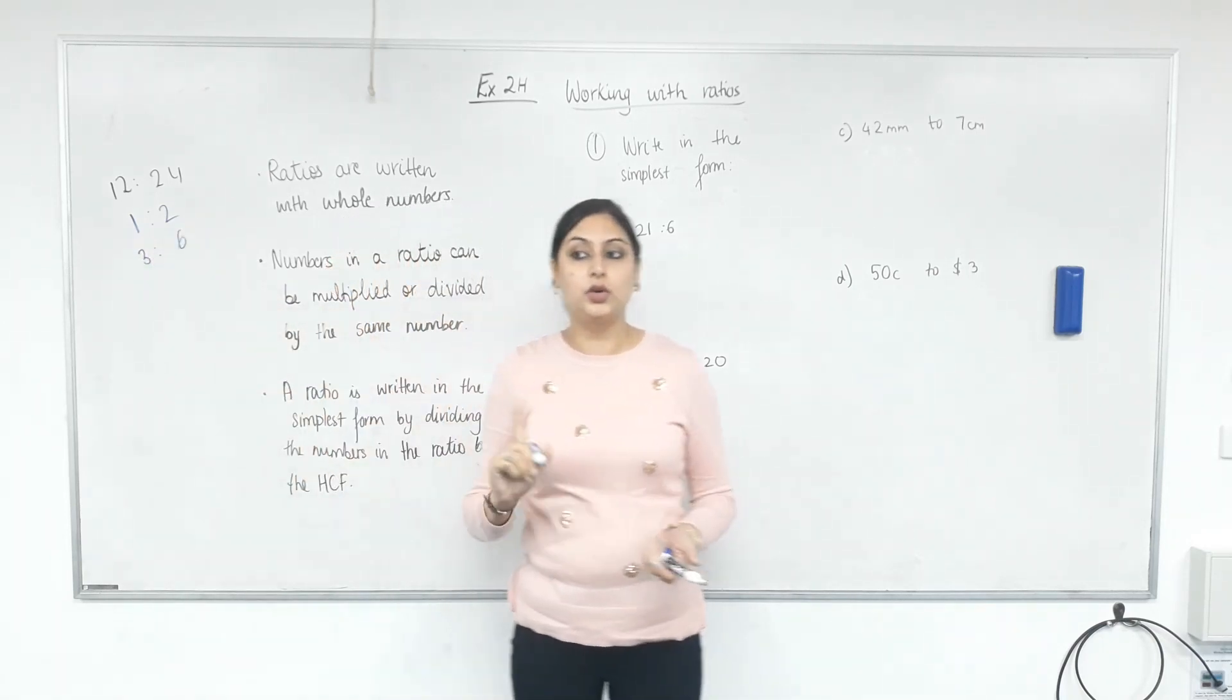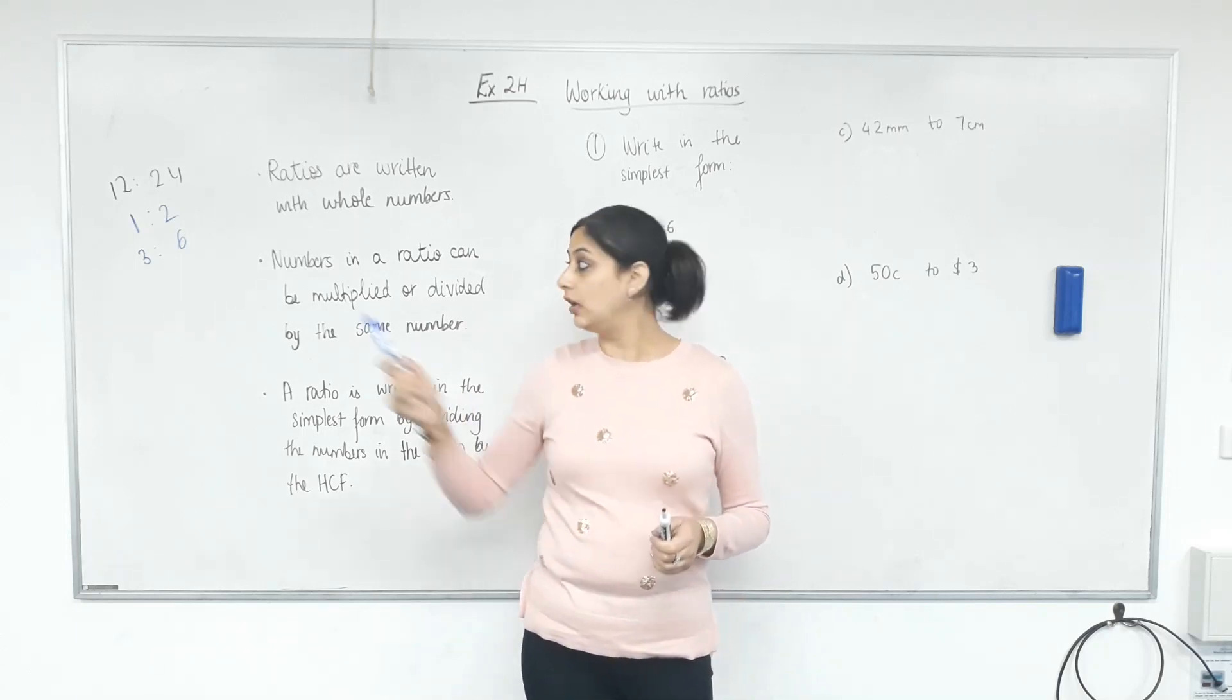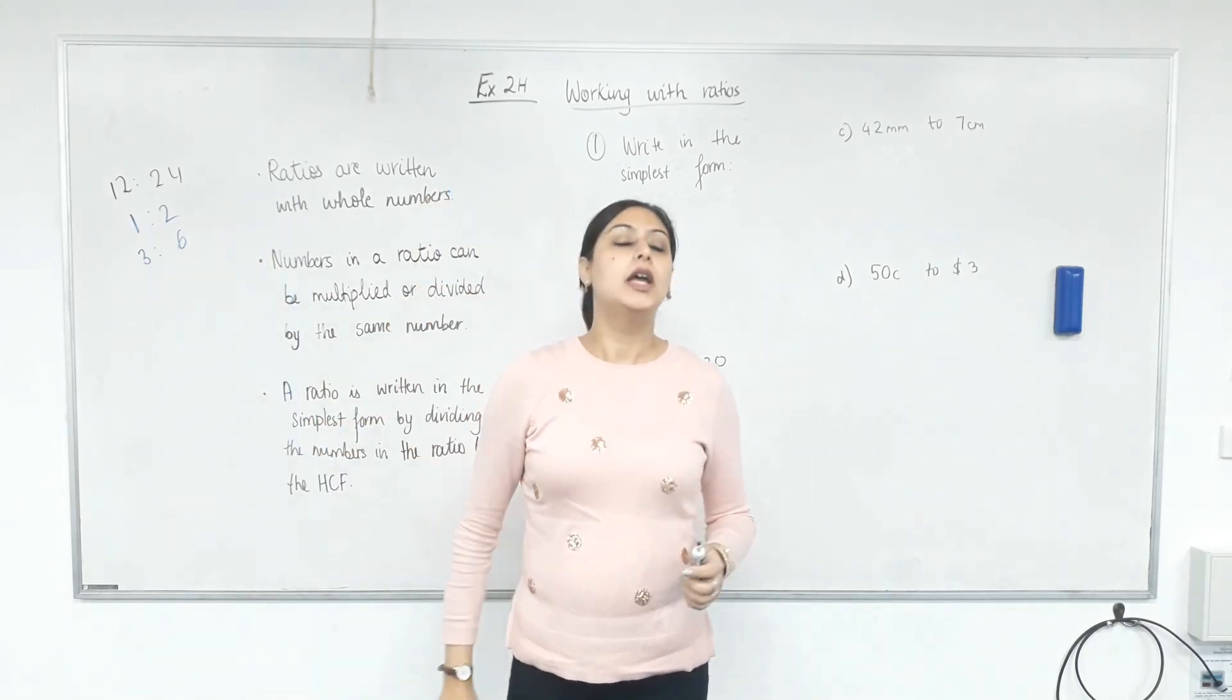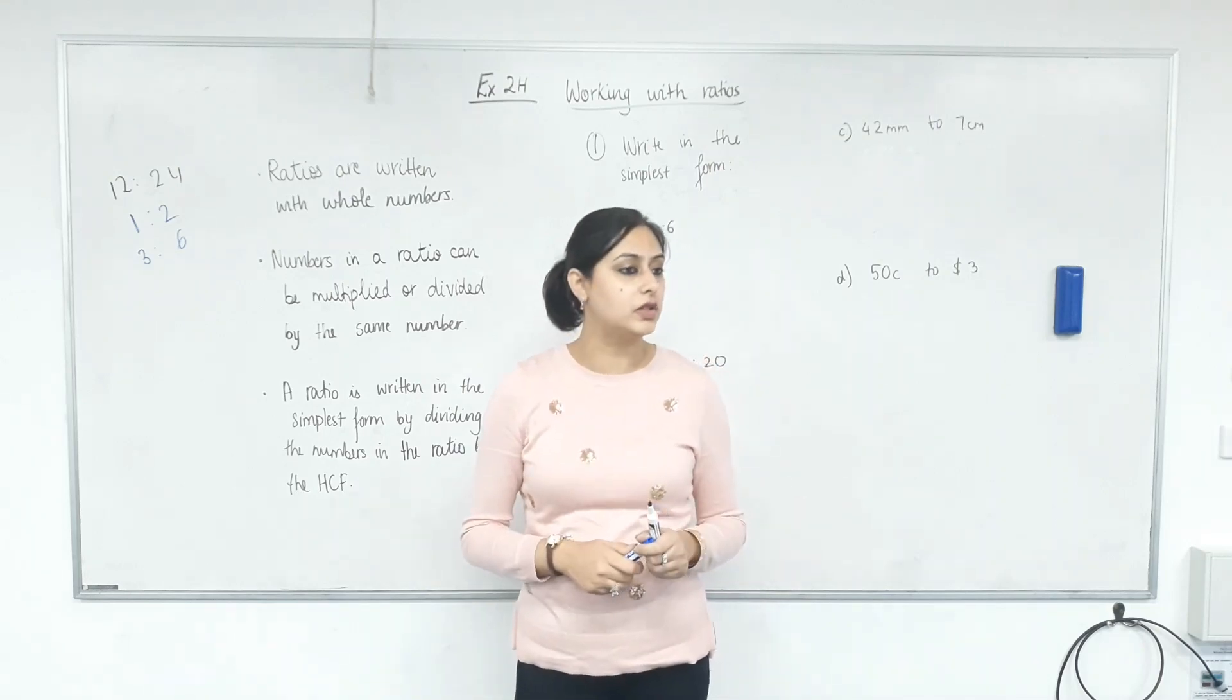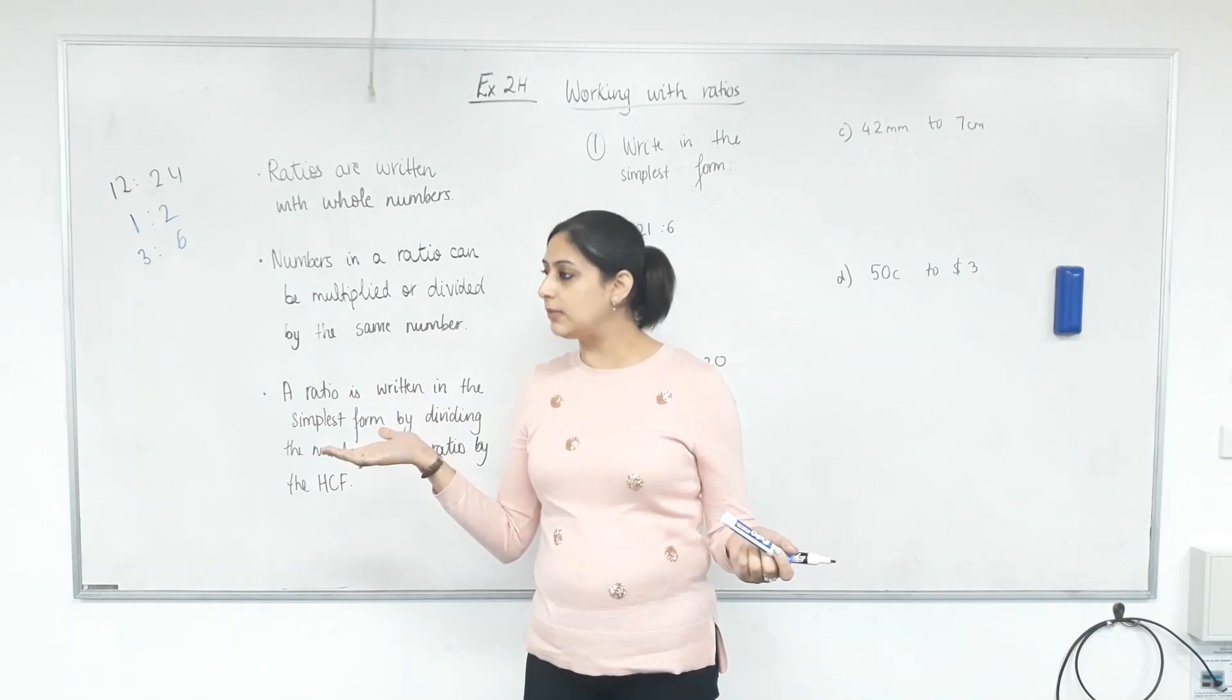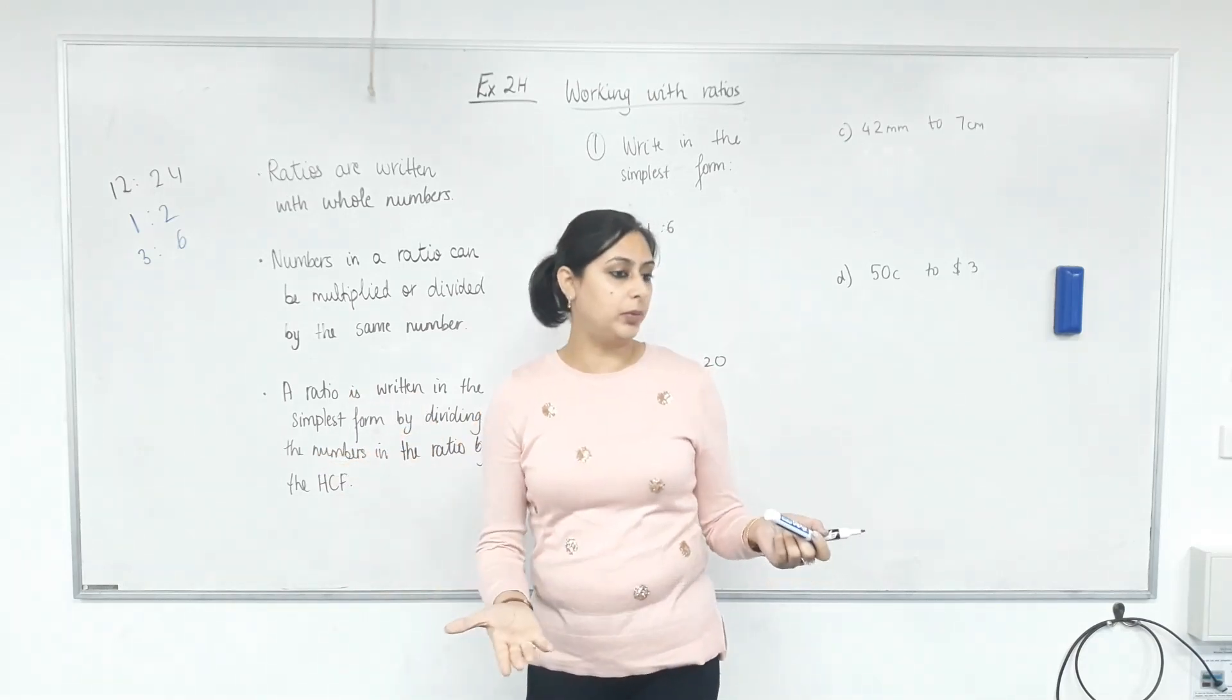What are these ratios called? They're not equal. What are they called? This is not simplified. But what's the relationship between these three? Equivalent. Equivalent ratios. These are equivalent ratios, just like equivalent fractions. How did we get equivalent fractions? When we multiplied top and bottom by the same number? Yes.